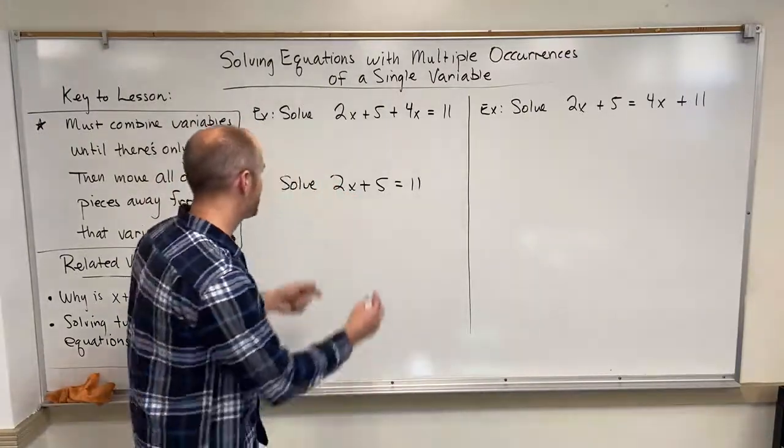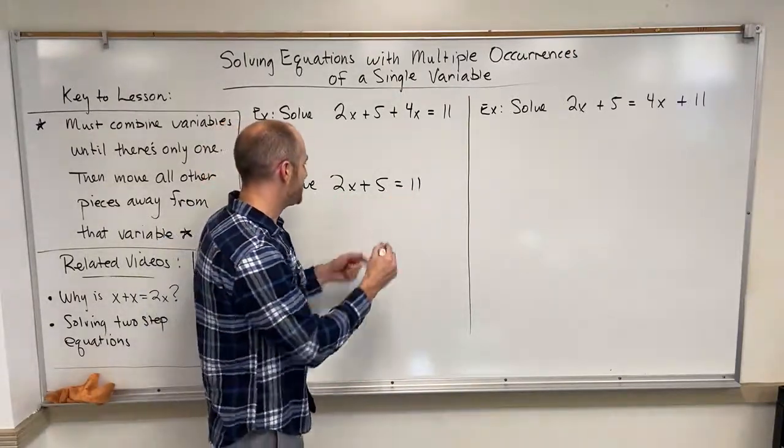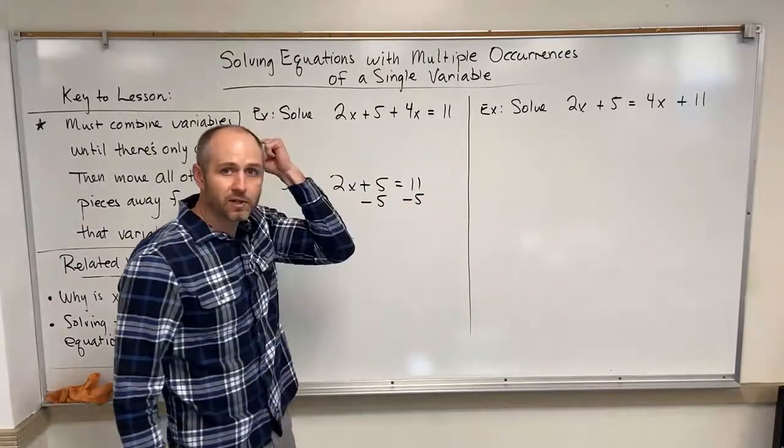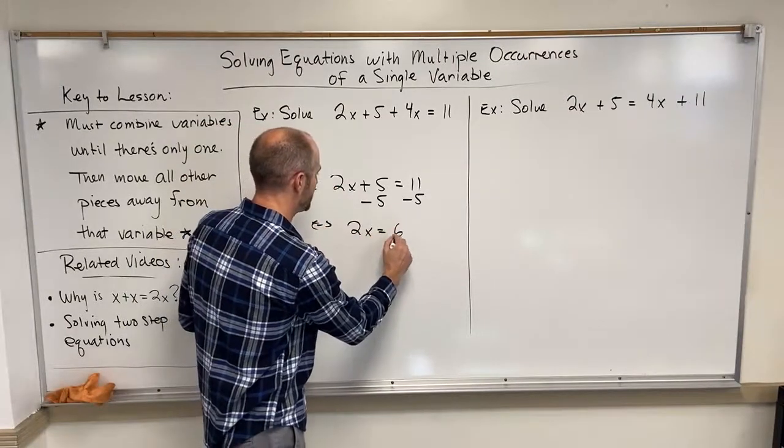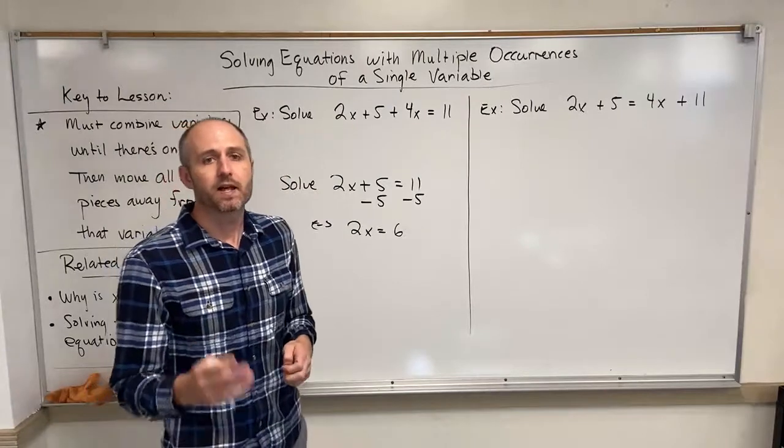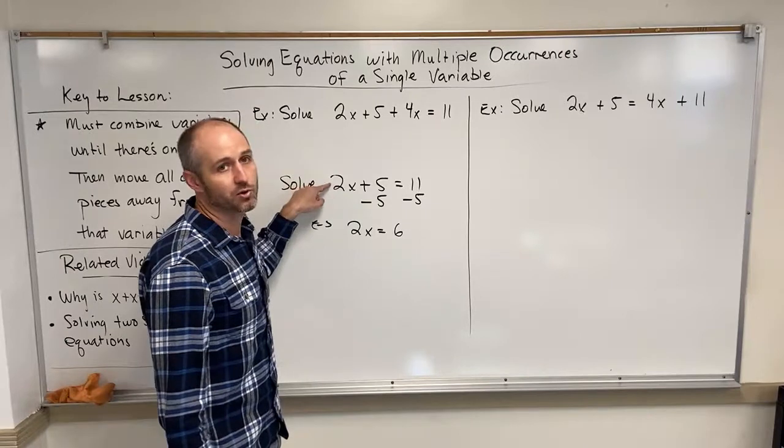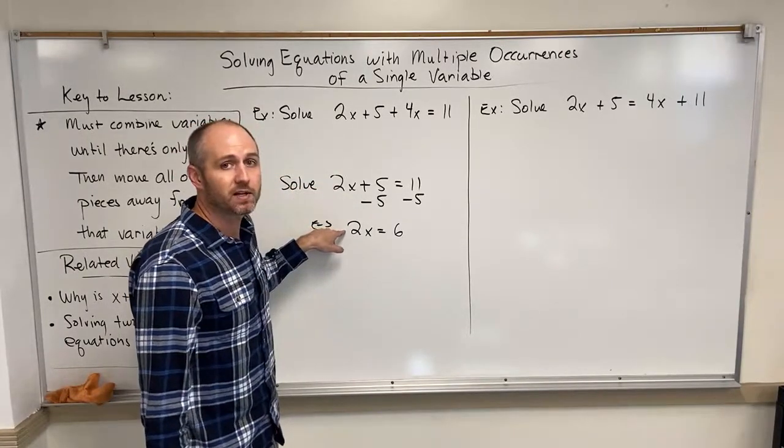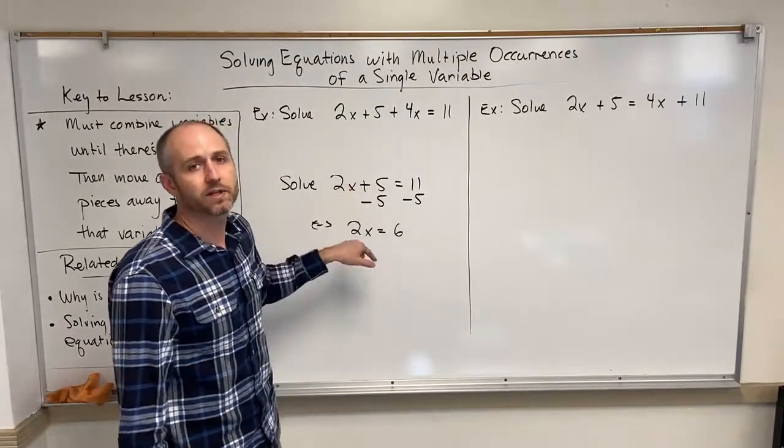So if we can use the properties of equality to create simpler equivalent statements that have the same solution, then eventually we'll get to a statement that's so simple that we'll be immediately able to see what the solution is. So for example, if we take this statement, which is kind of a little difficult to see what the solution is, but we use the subtraction property of equality, then what we're going to do is we're going to create an equivalent statement like this one, 2x equals 6. And the deal with equivalent statements is that equivalent statements have the same solution.